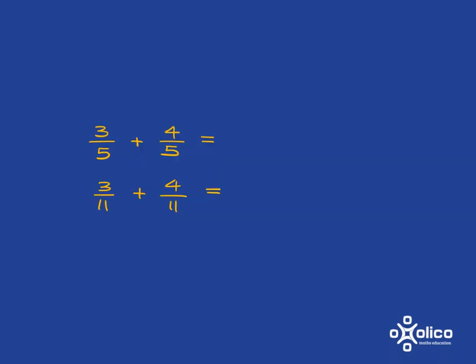Let's start with some very easy additions. So if we've got 3 over 5 plus 4 over 5, that should be very easy for you by now. You have the common denominator of 5 already, so you can just say 3 plus 4 over 5 and get your answer of 7 over 5.